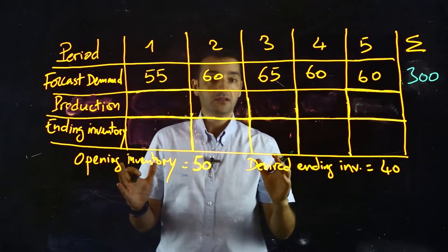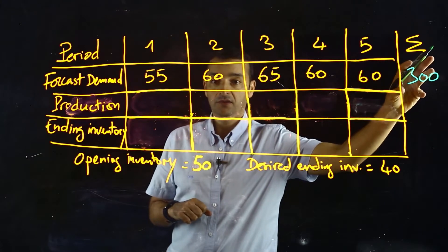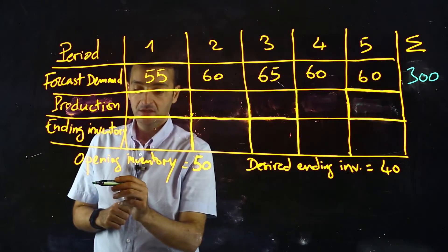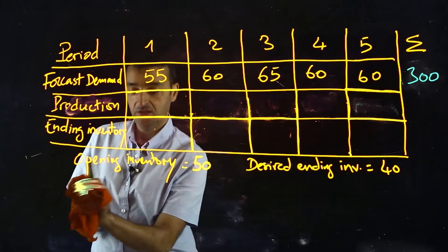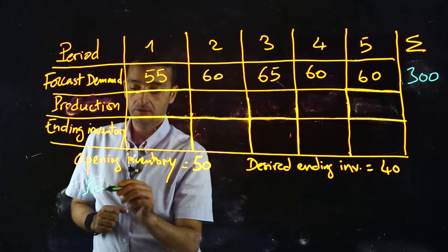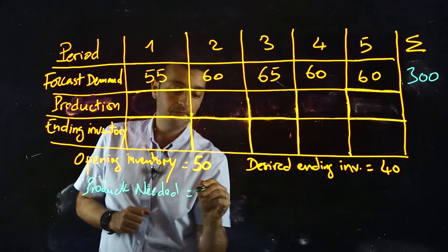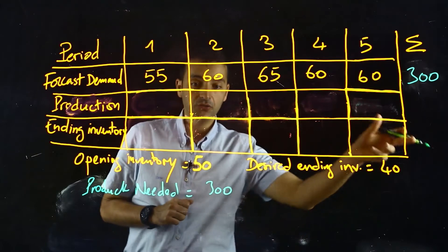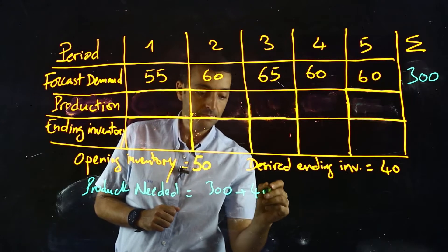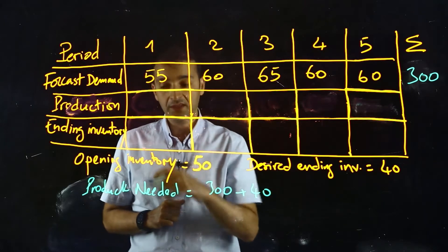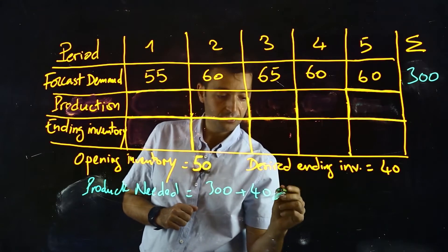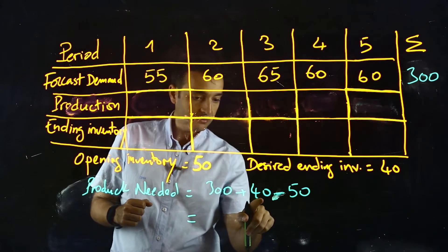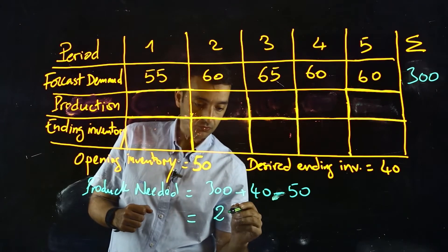The production need must consider the total forecasted demand, the opening inventory, and the ending inventory. The total production needed is 300 plus 40 units desired as ending inventory, minus 50 units already in the opening inventory. So the total production needed is 290.